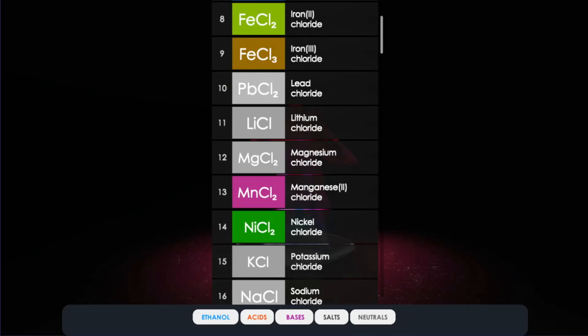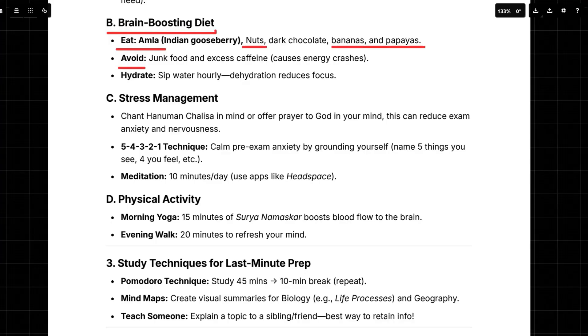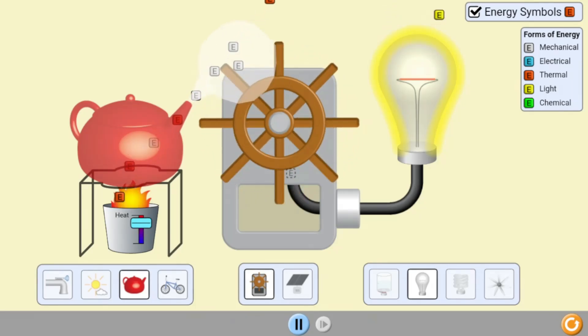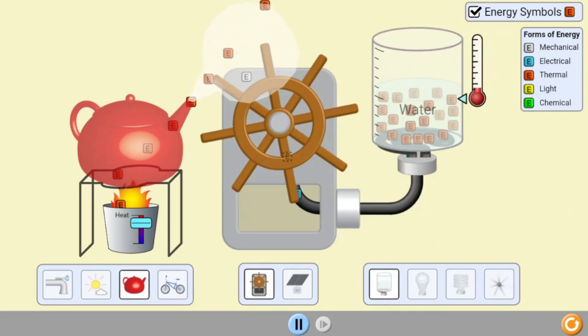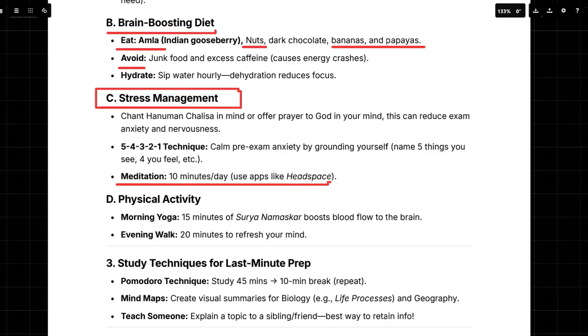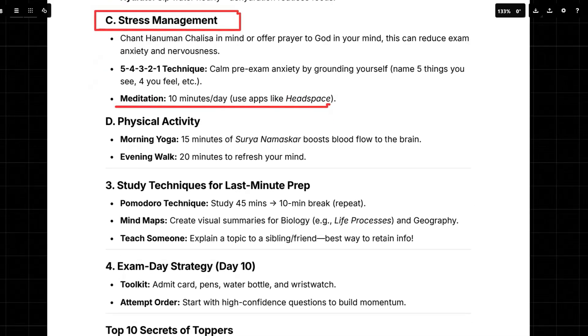Now you also asked about stress and how to boost confidence, which is super important. This plan has some interesting things to say about stress management. It suggests trying things like chanting or prayer to calm anxiety. And there's this grounding technique, which is called 5-4-3-2-1. That's where you name five things you see, four things you feel, and so on. It's a way to bring yourself back to the present moment when you're feeling anxious. They also suggest meditation for 10 minutes a day, which can be really helpful. And exercise is essential too, like morning yoga and an evening walk. Just 15 minutes of yoga and a 20-minute walk can make a huge difference. So for confidence, they've got this really good point about staying positive. It's all about replacing I can't with I'll try. It's a small shift in mindset, but it makes a big impact.